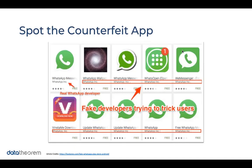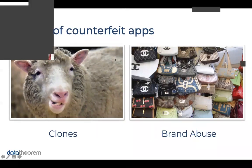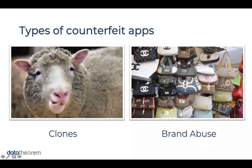There are really two types of counterfeit apps. The first is what we call clones — probably the most famous clone being Dolly the sheep. A cloned app is a counterfeit app that takes a legitimate app, clones the binary so it's an exact replica, and then some malicious activity is done with it.